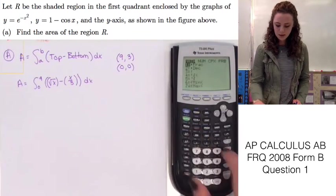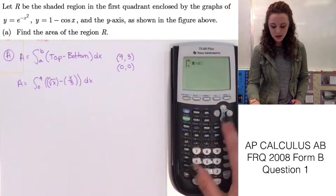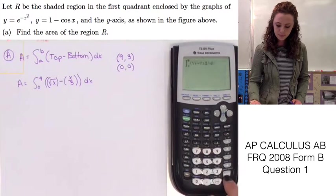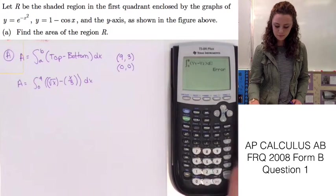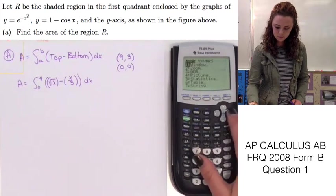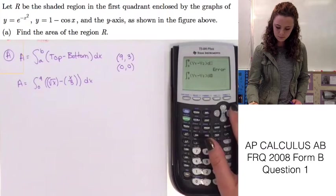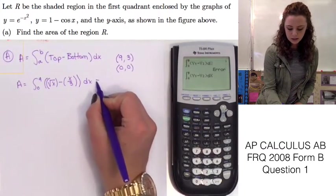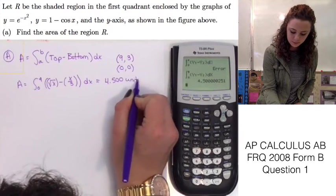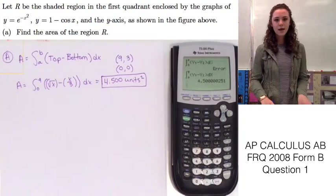So math 9, lower limit of 0, upper limit of 9, and then we put Y1 minus Y2. We get that our answer is 4.500 units squared. That's how you complete your answer for part A of this question.